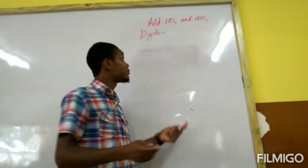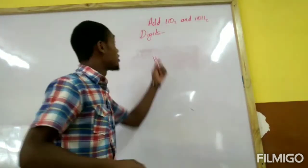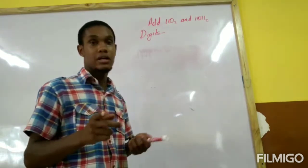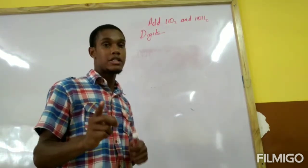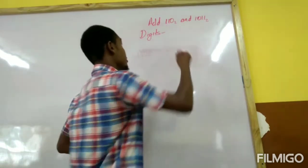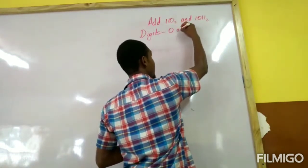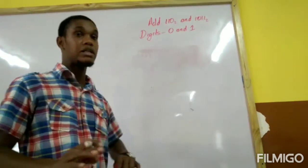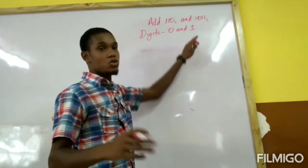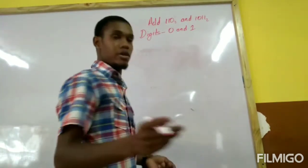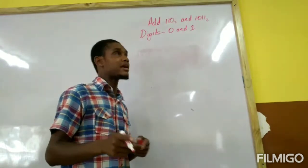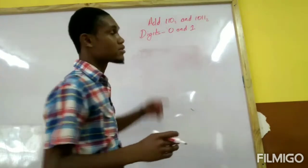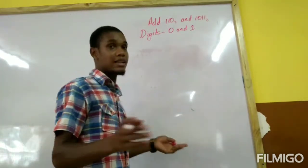Alright, so we are here again with Mr. Brown. We are adding in the base 2 system. A key factor in base 2 is that all the digits that exist are 0 and 1. If you are good at computer science, you will eventually learn about binary. This system is called a binary system, so it only has ones and zeros.